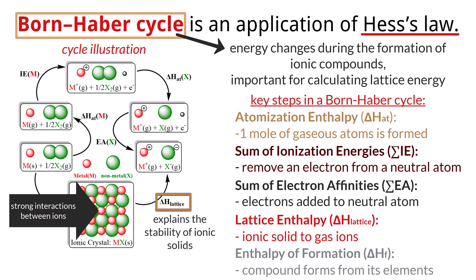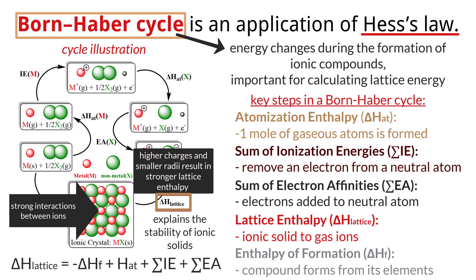The strength of the lattice enthalpy is influenced by the charge and the size of the ions. Higher charges and smaller ionic radii result in stronger lattice enthalpies. The overall equation for the lattice enthalpy of an ionic compound is delta H sub lattice equals negative delta H sub F plus H sub AT plus the sum of IE plus the sum of the EA.